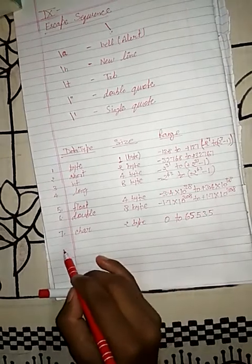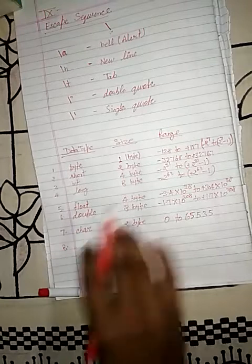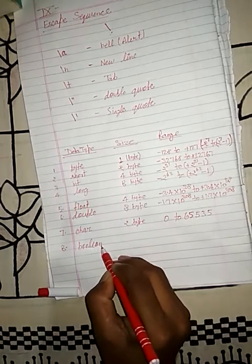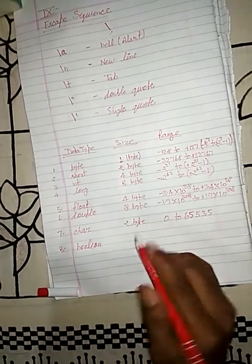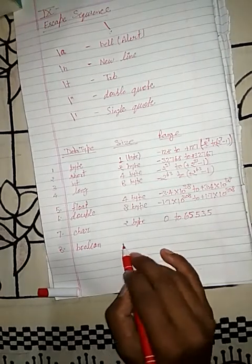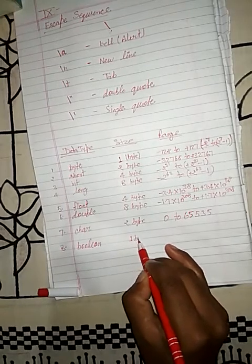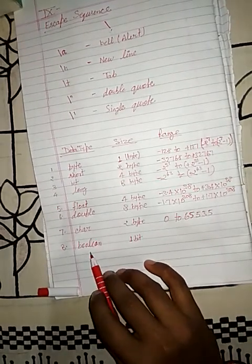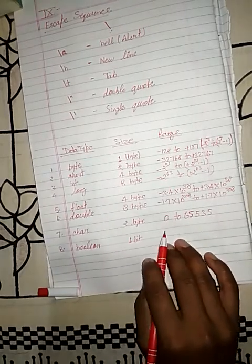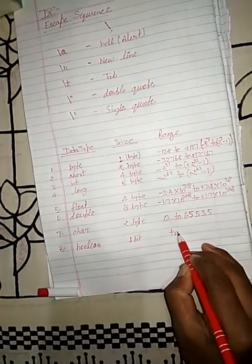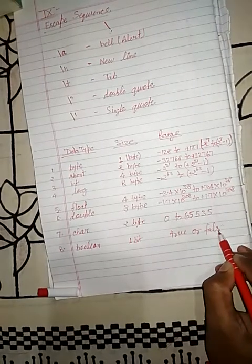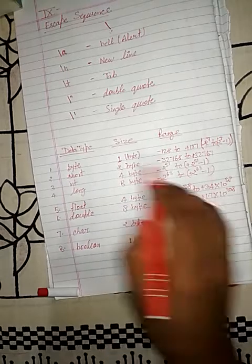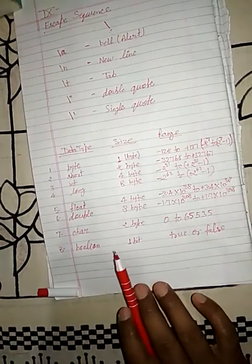The last primitive data type is boolean. Its size is 1 bit, though Java reserves 8 bits for boolean. It accepts only 1 bit. The range means it can hold only true or false — only one of these two values can be accepted by boolean. This is the complete table for primitive data types and their sizes and ranges.